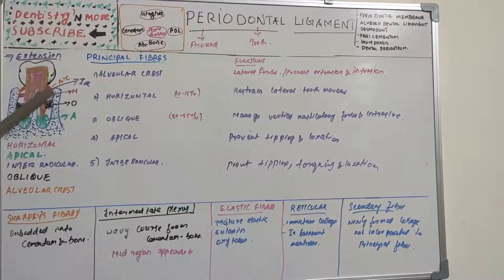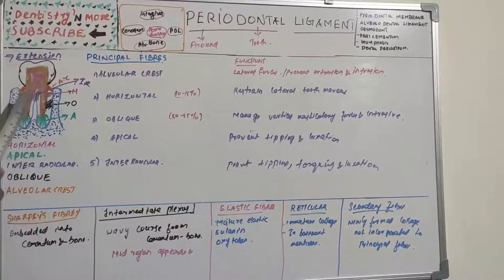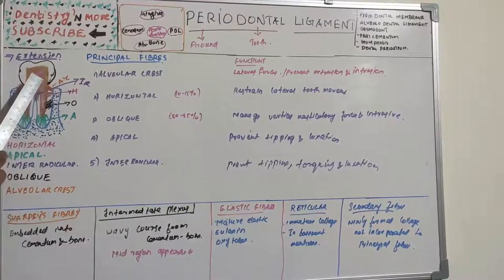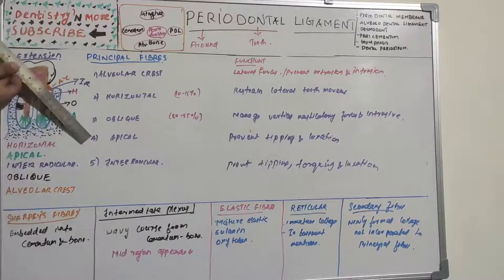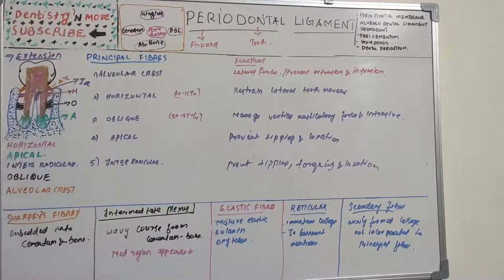The alveolar crest group extends obliquely from cementum, just beneath the junctional epithelium, to the alveolar crest and to the fibrous layer of periosteum covering the alveolar bone. It runs at an oblique angle — not horizontal and not perpendicular — starting from cementum beneath the junctional epithelium and reaching the alveolar crest.